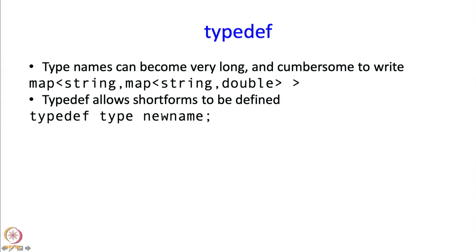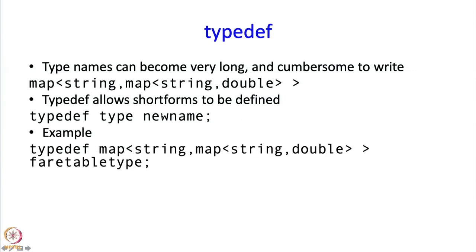So for this, I could have written something like this. I would say typedef and this is the type, this very type mentioned over here. And for that, I am going to create the name called faretabletype. So this is the type. And this is the name that has been created, this is the synonym for this long type name.